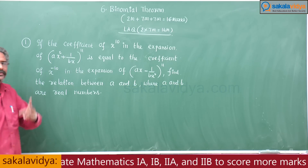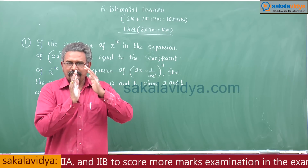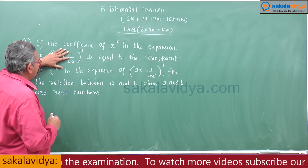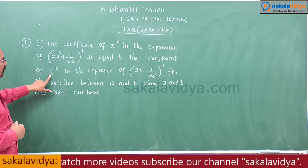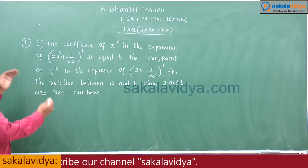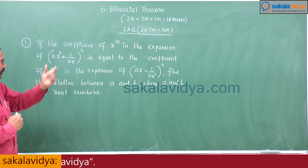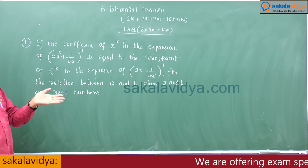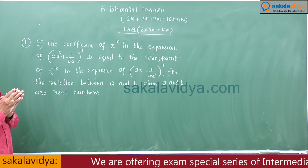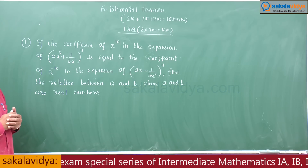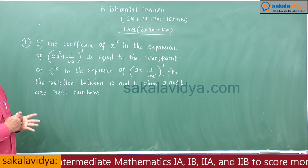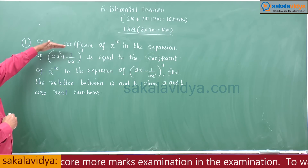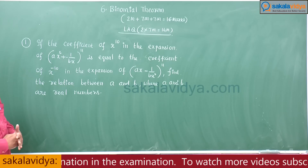In this problem we have two steps. First, find the coefficient of x to the power of 10 in the first expansion, and the coefficient of x to the power of minus 10 in the second expansion. Second, both the coefficients are equated and we get a relation between A and B.